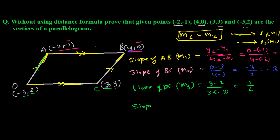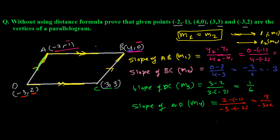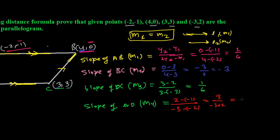Finally, let's find the slope of AD — call this m4. Difference of y-coordinates: 2 - (-1) = 3. Difference of x-coordinates: -3 - (-2) = -1. So slope of AD, m4 = 3 / (-1) = -3.